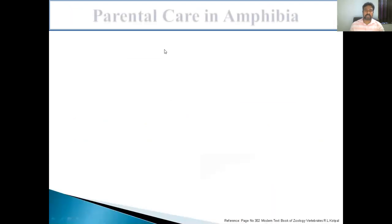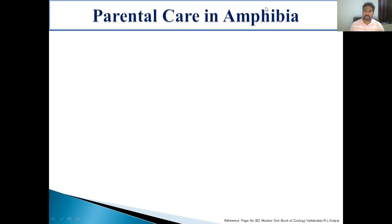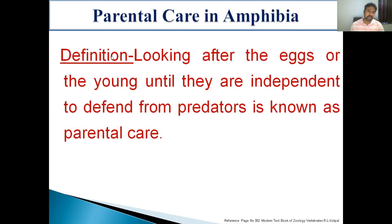Animals show great diversity in parental care. Perhaps no group shows as great diversity in parental care as shown in amphibians. The question arises: what is parental care? Parental care is defined as looking after the eggs or the young until they are independent and able to defend from predators. This parental care is important for the survival of the animal.